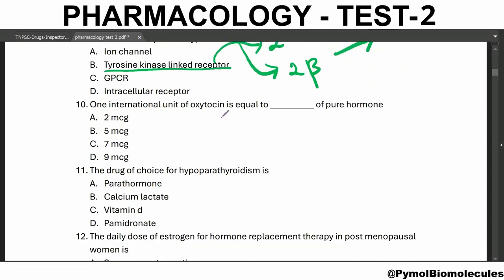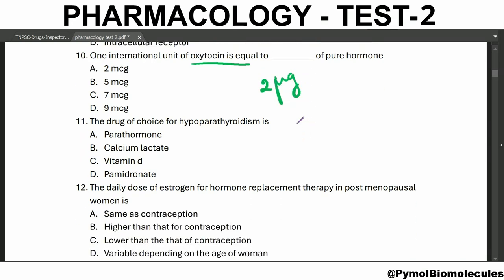One international unit of oxytocin is equal to 2 micrograms of the pure hormone. So 10 international units contains 20 micrograms. The drug of choice for hypoparathyroidism is vitamin D.